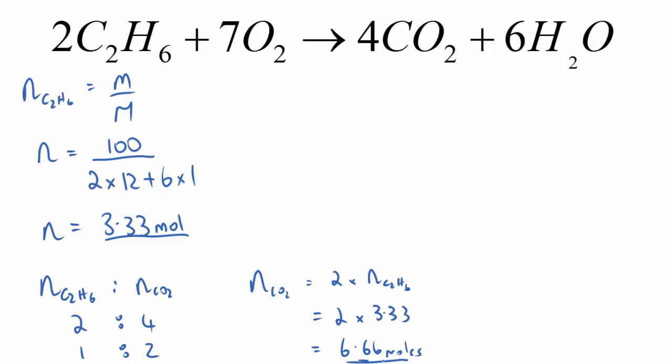So now we know how much moles of carbon dioxide is going to be made from 100 grams of ethane. But the question actually asked us for the mass, so we need to convert that back. Using the same formula, our moles of carbon dioxide is mass on molar mass. This time we know the moles. We know that this is 6.66. We don't know the mass, but that's what we're trying to find out, and we get the molar mass. Going back to the periodic table, carbon is 12, oxygen is 16. So our molar mass is 12 plus two lots of 16.